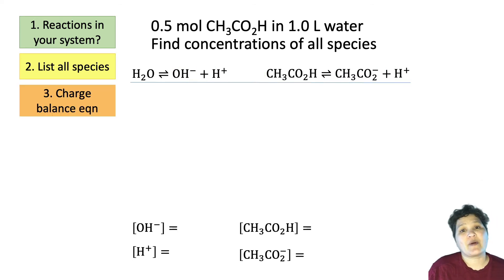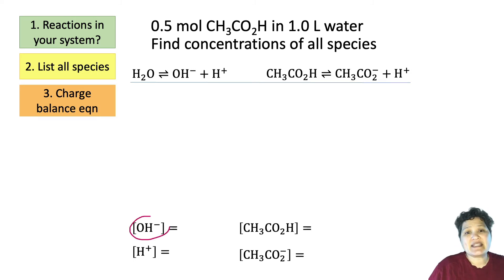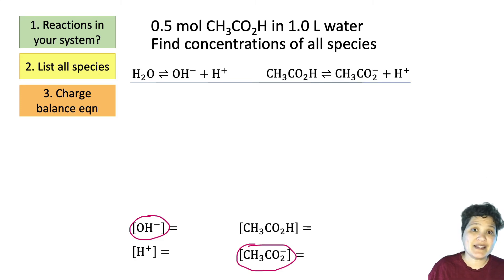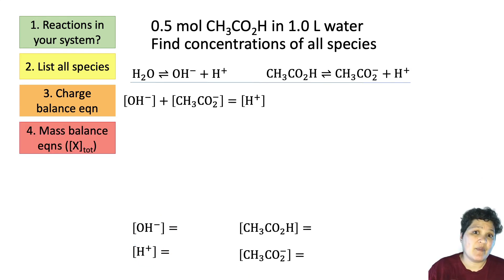The next thing we need to do is write a charge balance equation. We look at our reactions and identify anything with a negative charge — we have two: OH⁻ and acetate. Those go on one side of the equation and have to equal our positively charged species, which is H⁺. So [H⁺] = [OH⁻] + [acetate].